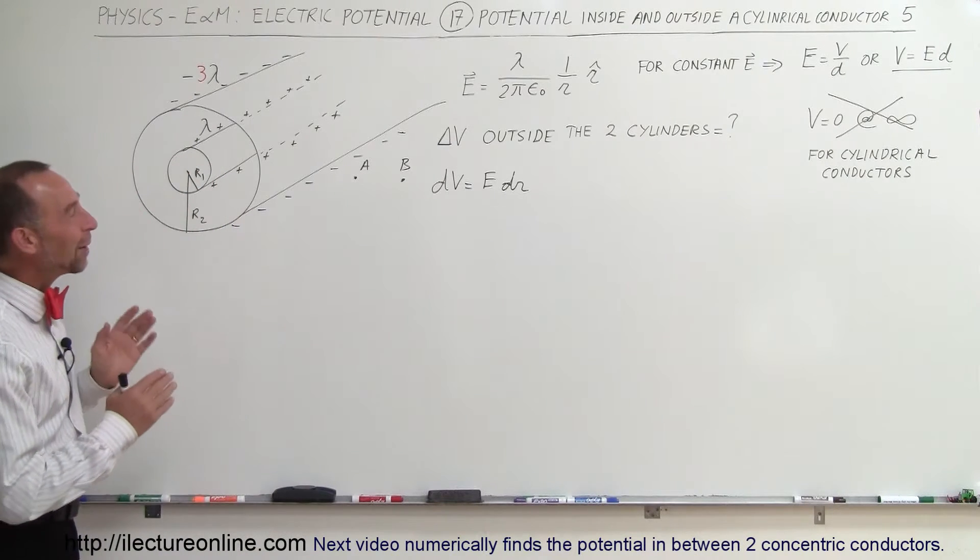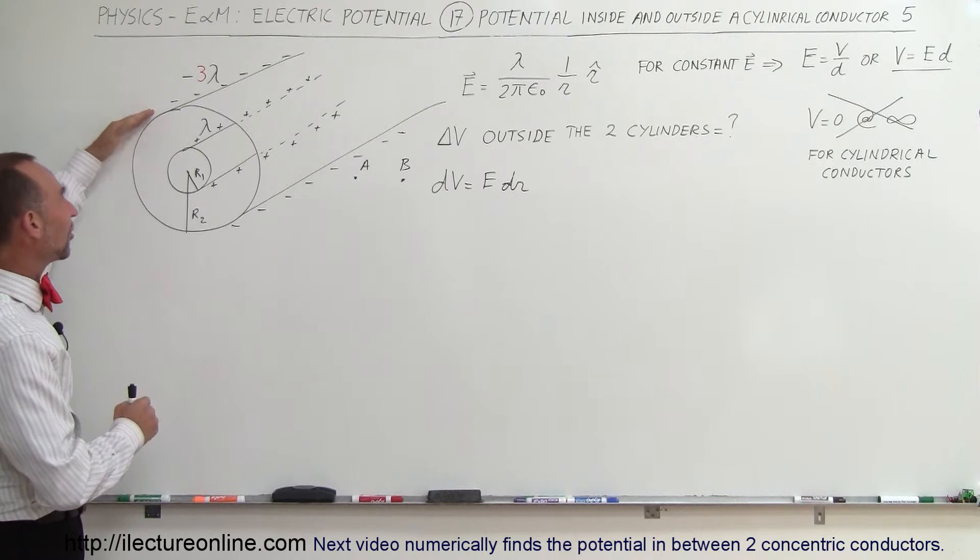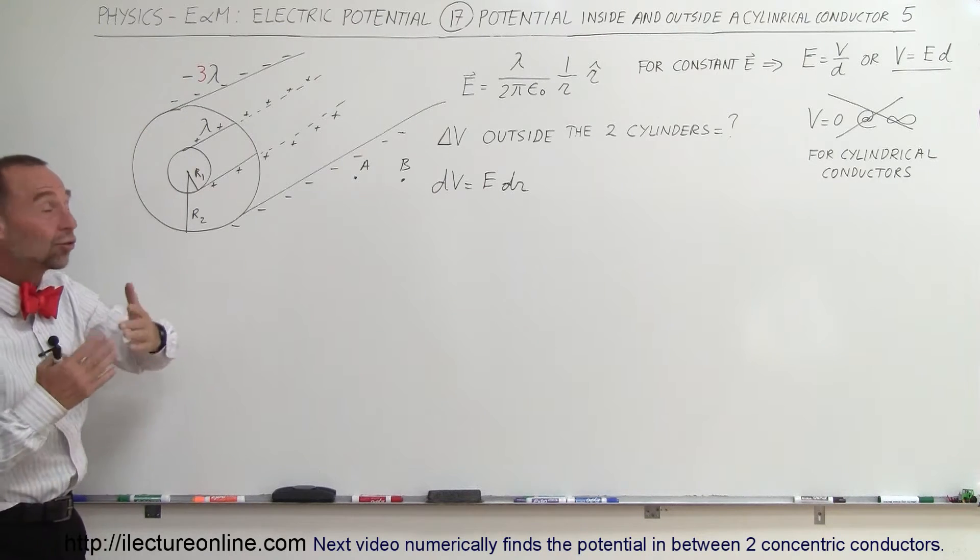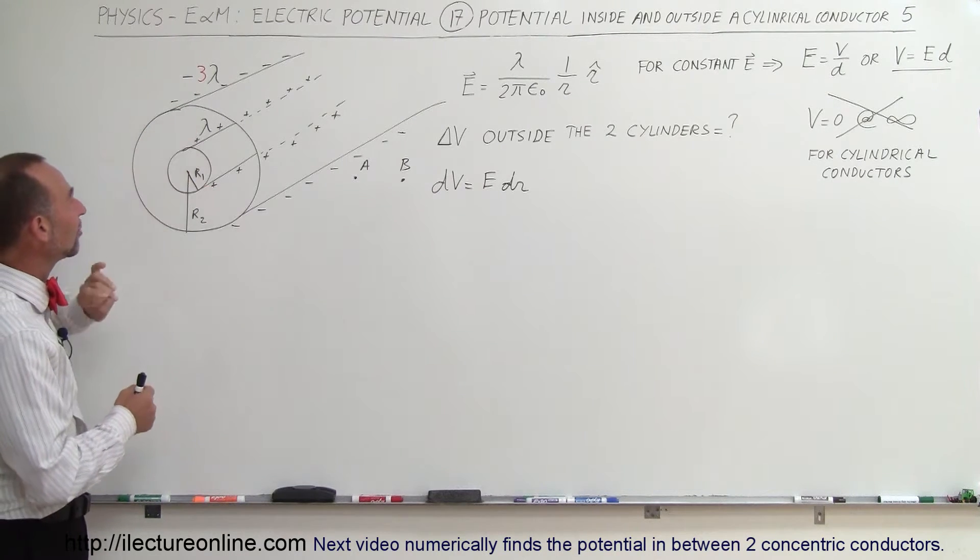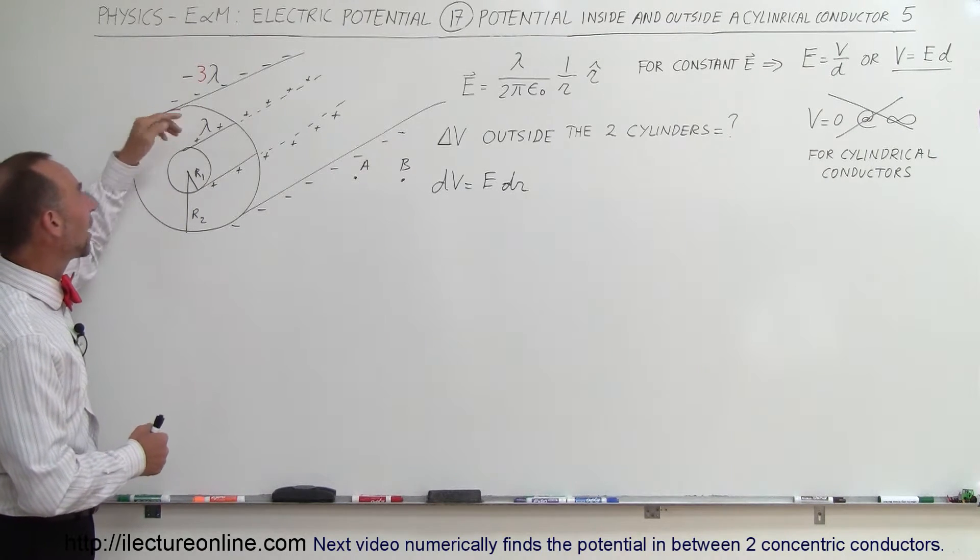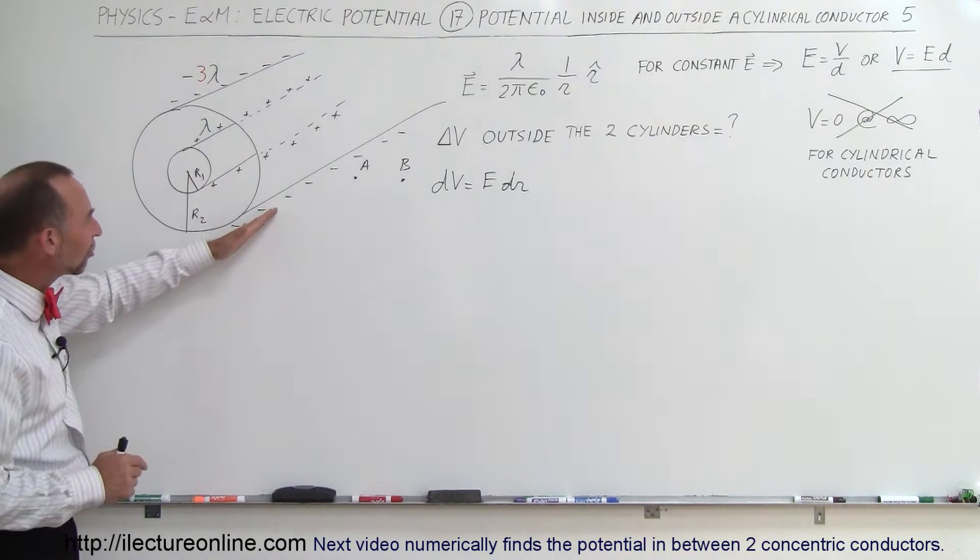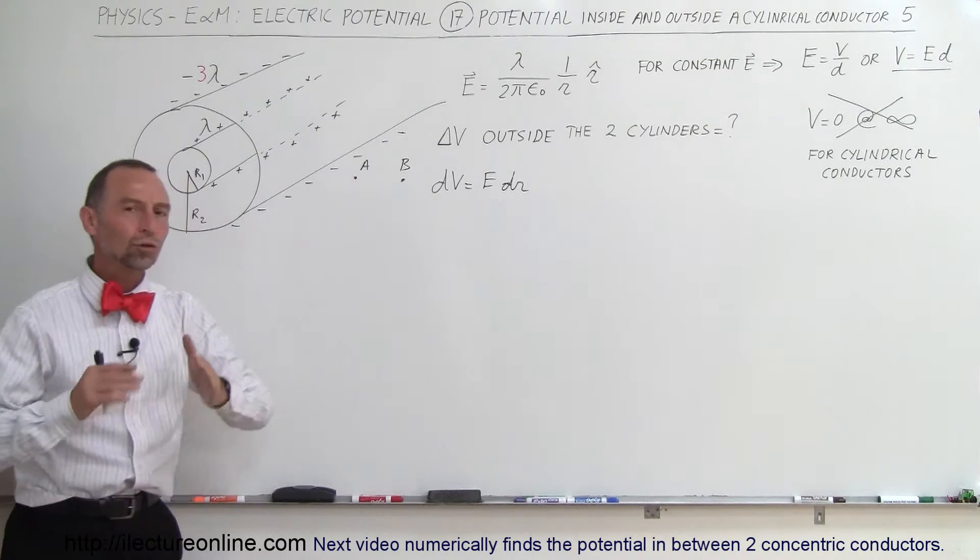Welcome to ElectronLine. Now we're going to take a look at the example where the charge on the outside cylinder is different in concentration or density than the charge on the inside cylinder. So the linear charge density on the outside is minus 3λ, the inside is plus 1λ. So what would be the potential difference now outside those two cylinders?